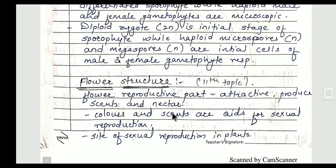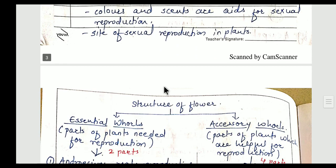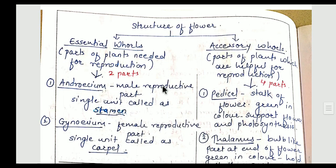Now we are going to focus on the structure of flower. The site of sexual reproduction in plants is the flower — it is the most attractive part, which produces scent and nectar required for pollination. Pollination is a further topic we will study in this chapter. I have drawn one chart here. The structure of flower involves two main parts: the essential whorl and the accessory whorl.